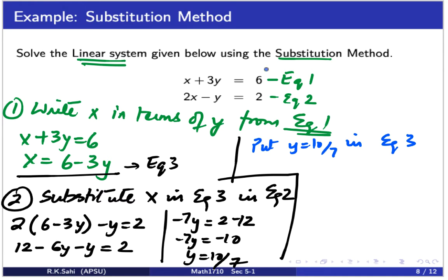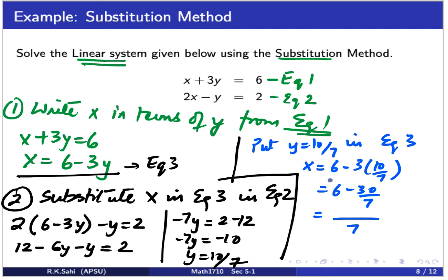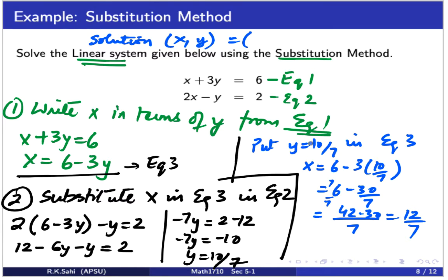Now put y equals 10/7 into equation 3 to find x: x equals 6 minus 3 times (10/7), which is 6 minus 30/7. Finding a common denominator: 42/7 minus 30/7 equals 12/7. So x equals 12/7. The solution to this system is the ordered pair (12/7, 10/7). You can verify by plugging this back into both equations.